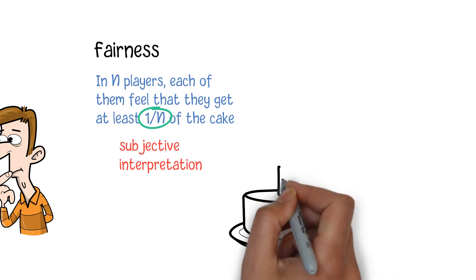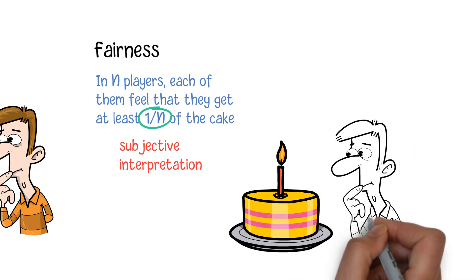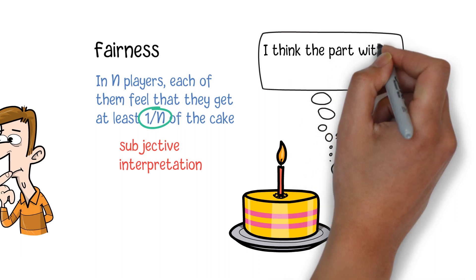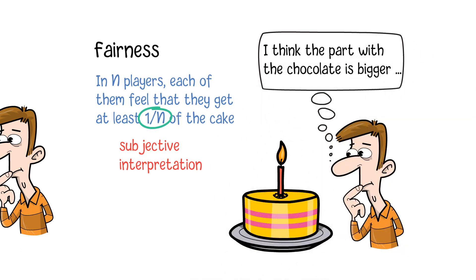For example, some people prefer chocolate to fruits. So they will consider the parts containing more chocolate are better than the part having more fruits, although the two parts are the same size, and thus think they will get more than 1 over N if they choose the parts having more chocolate.